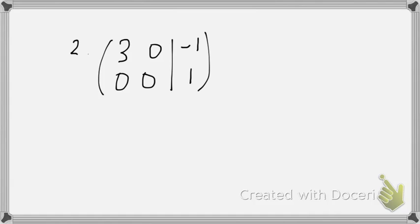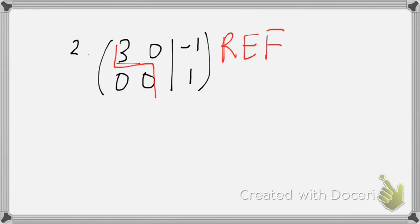For the second matrix, we have a leading entry and the stair-step pattern, so this is in REF. However, when we write it back into system form, the last row gives us 0 = 1. Since 0 is not equal to 1, this system is inconsistent.